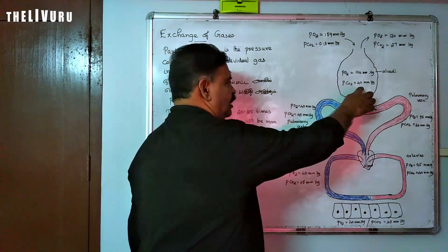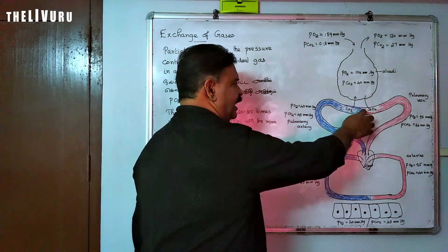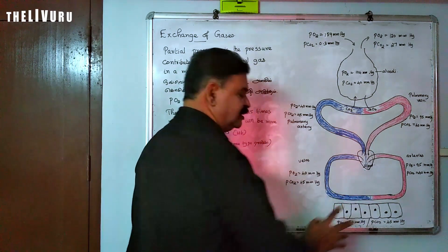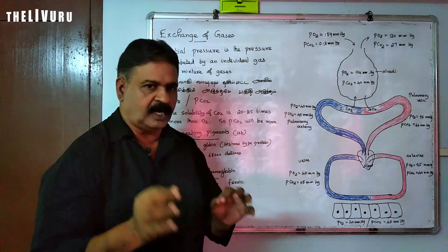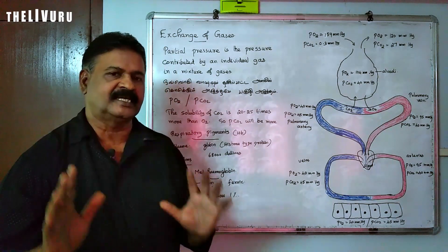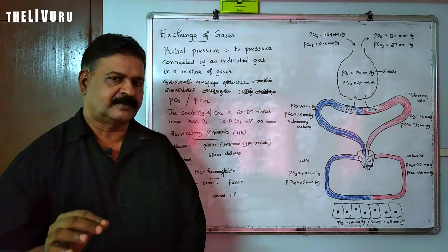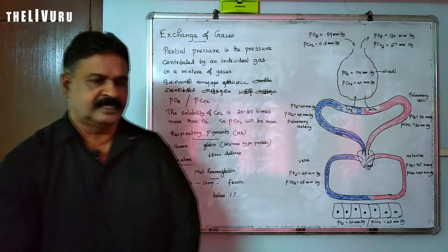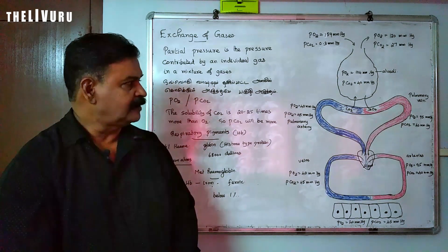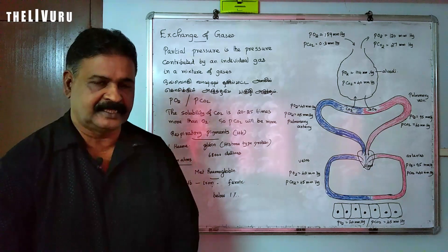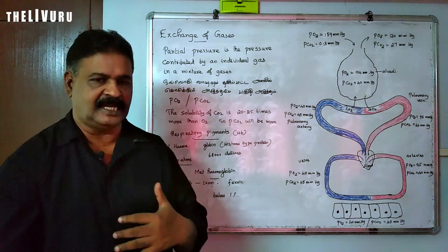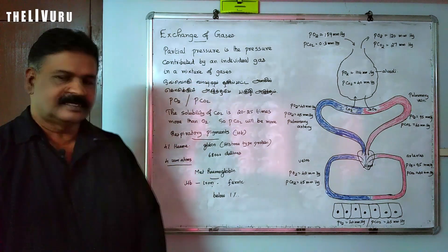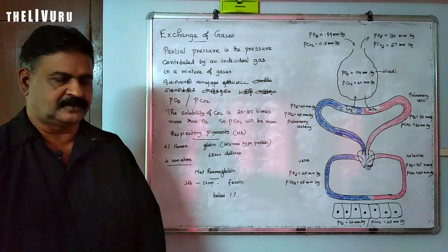Gas exchange takes place in two locations: one is in the alveoli and the blood vessel, and the next one is in the blood vessel and the tissues. Exchange occurs only on the basis of partial pressure of oxygen and carbon dioxide. This is how oxygen is transported to the cells.